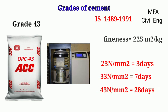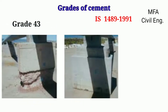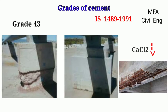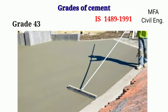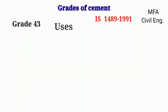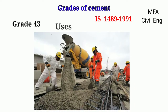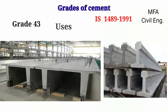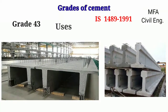The compressive strength for 43 grade is 43 N/mm² for 28 days of testing. This cement is moderately sulfur resisting and has a low chloride content, therefore does not cause corrosion of steel reinforcement. It has good workability and gives a better finish surface. This cement is used in ready mix concrete, PCC and RCC work, precast and pre-stressed concrete.